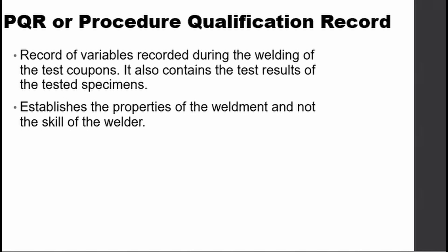It establishes the properties of the weldment and not the skill of the welder. The aim of the PQR is to demonstrate that during these tests, the materials and methods prescribed in the welding procedure specifications will produce a weld joint with the mechanical properties that will meet the application and the relevant codes and standards specified in the WPS. Note that it qualifies the weldment, not the skill of the welder.